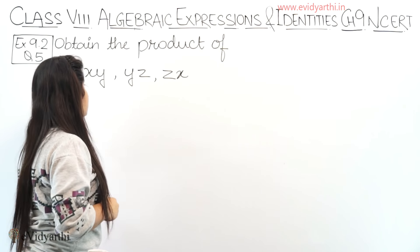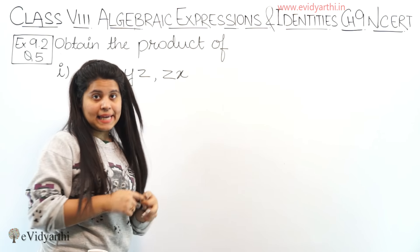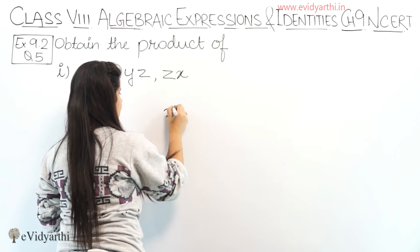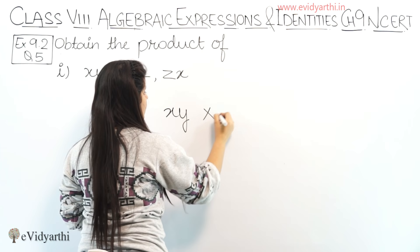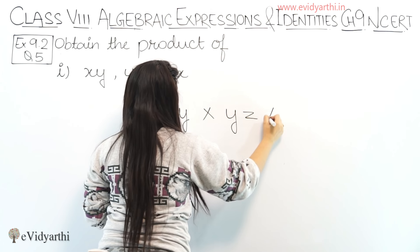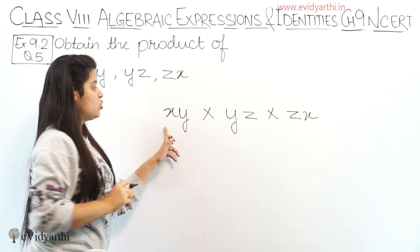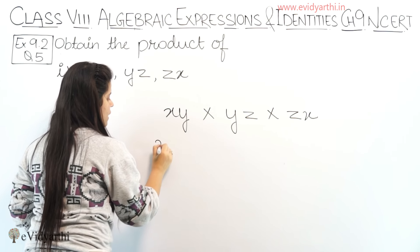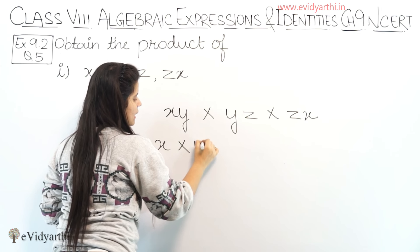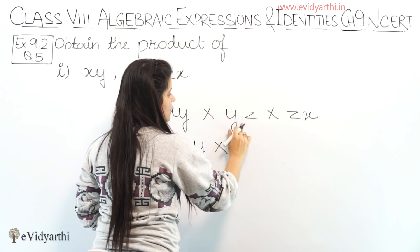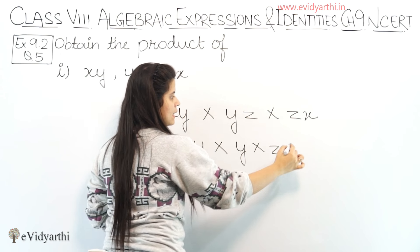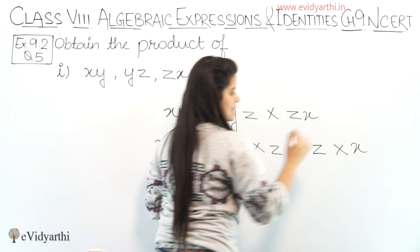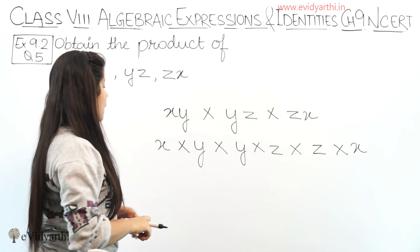The first part is xy, yz and zx. So we have to multiply them. Let's write it down: xy into yz into zx. Now this means xy is x into y.